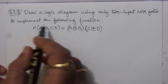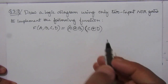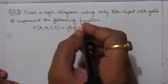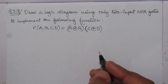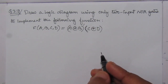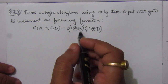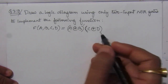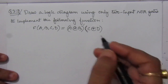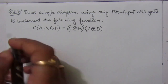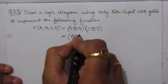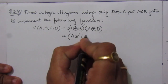We are given a function and we have to use only NOR gates for implementing it. The given function is (A XNOR B) · (C XOR D). First of all, we will expand this expression. A XOR B is A·B̄ + Ā·B.